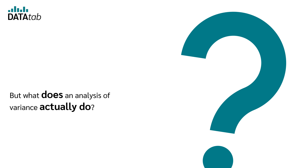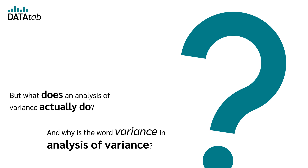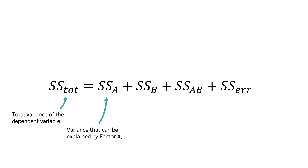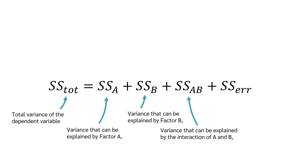But what does an analysis of variance actually do? And why is the word variance in analysis of variance? In a two-way analysis of variance, the total variance of the dependent variable is divided into: the variance explained by factor A, the variance explained by factor B, the variance of the interaction, and the error variance. Note that SS is not the variance itself but the sum of squares — we will discuss how to calculate the variance in a moment.